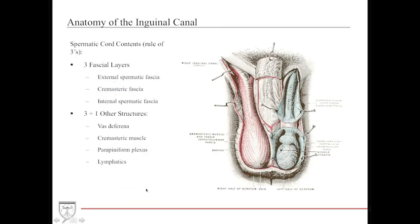There are also three fascial layers — external spermatic fascia, cremasteric fascia, and internal spermatic fascia — remembered by the mnemonic 'ICE tie.' Then there are three-plus-one other structures: the vas deferens, the cremasteric muscle, the pampiniform plexus (a venous plexus that helps with temperature regulation), and associated lymphatics.